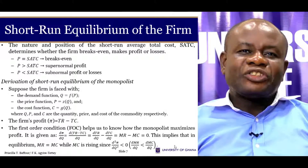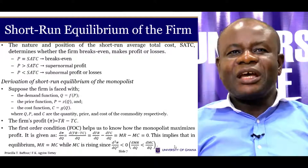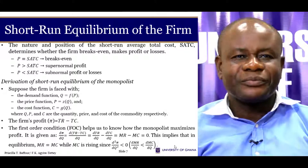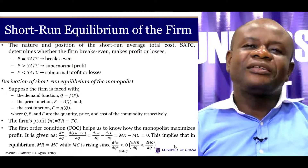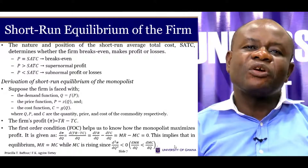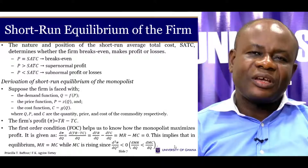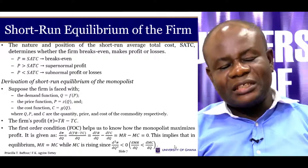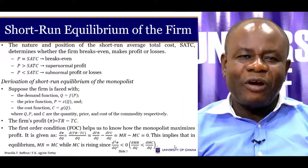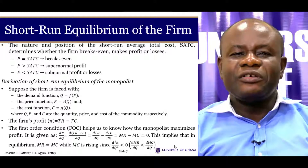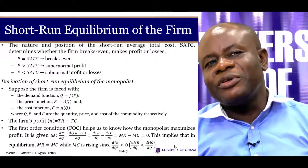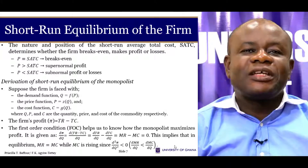We can derive the short-run equilibrium by starting with a demand function Q as a function of P. We can make P the subject to get our inverse demand function: P equals Z as a function of Q. Our cost function is C as a function of Q. Profit equals total revenue minus total cost. By maximizing revenue and minimizing cost, we maximize profit, so we take the first-order condition.